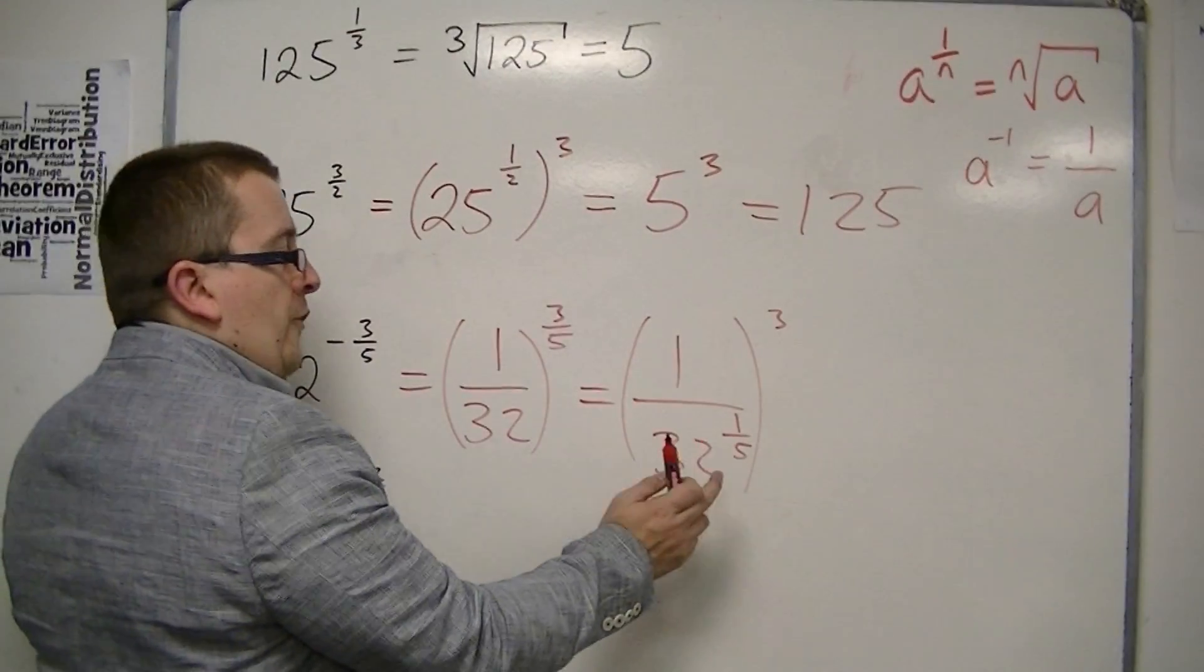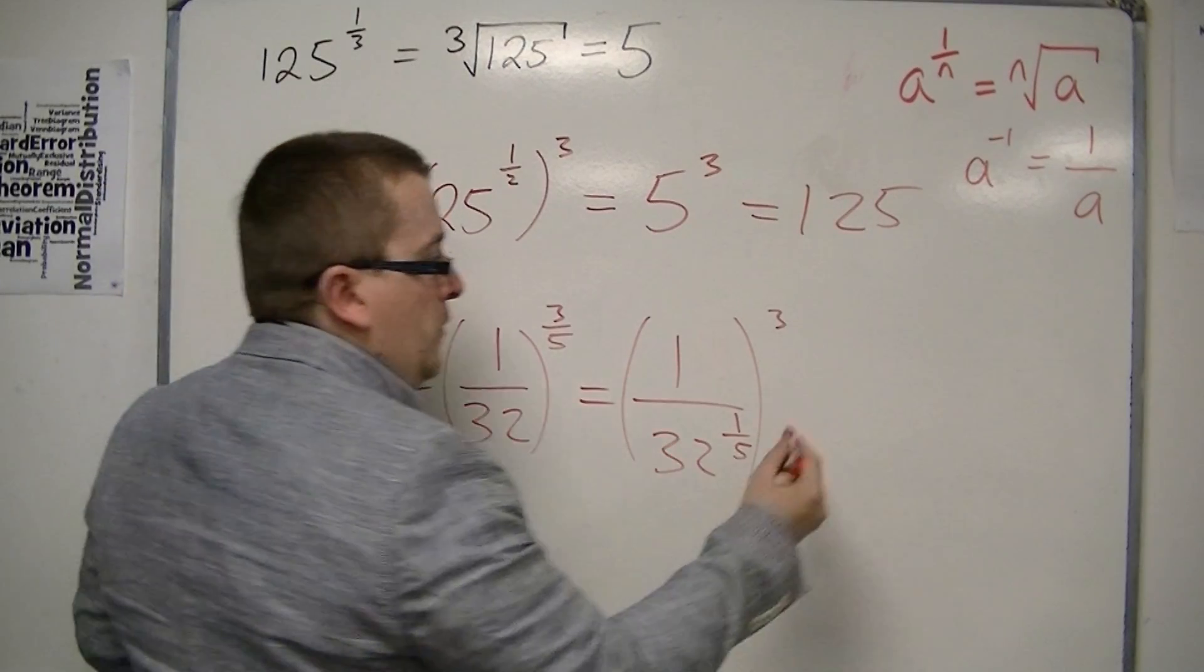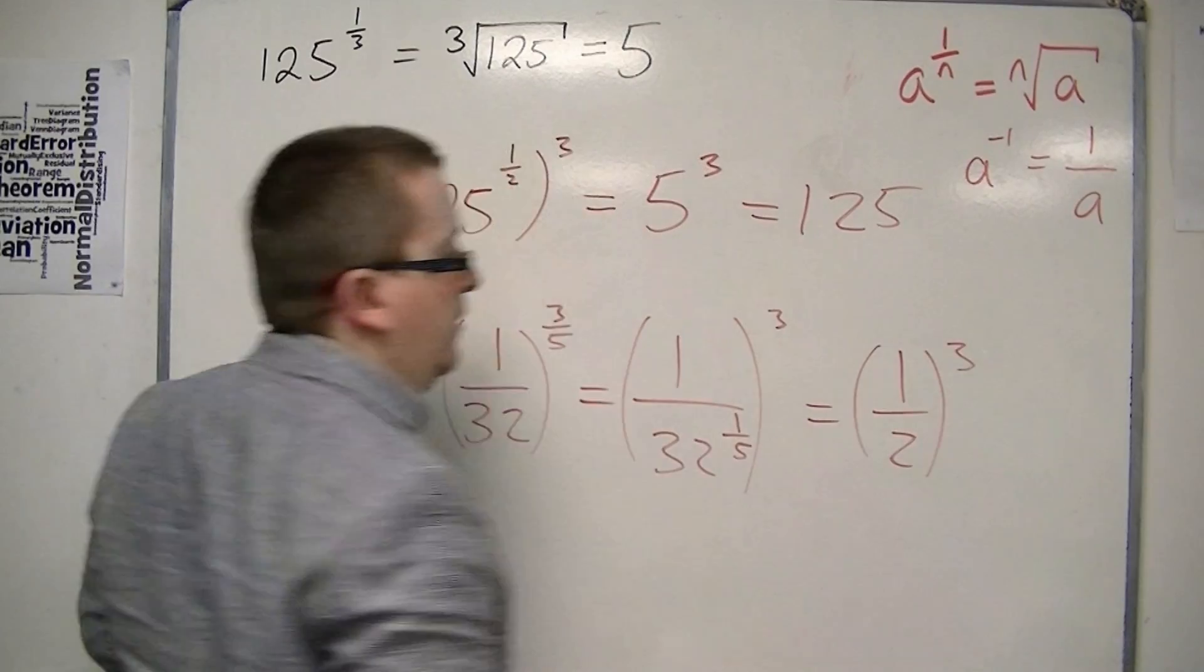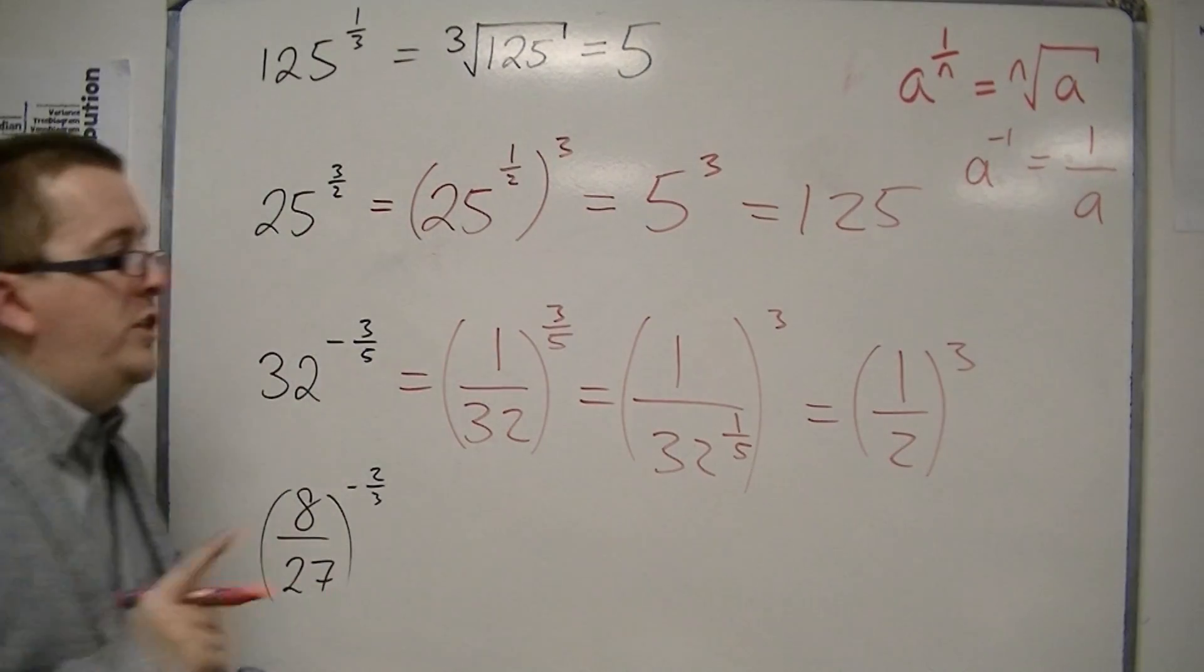We've got the fifth root of 32 on the bottom, which is 2. So this is 1 half, all cubed, which is 1 eighth.